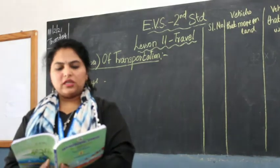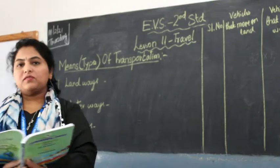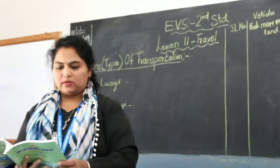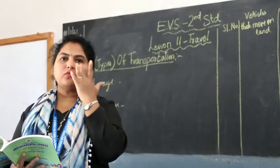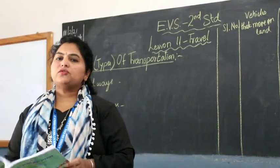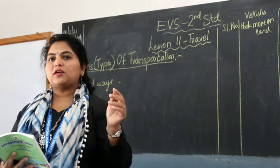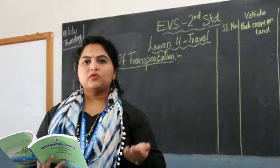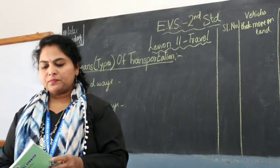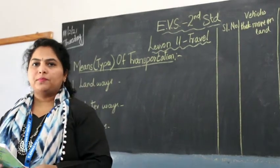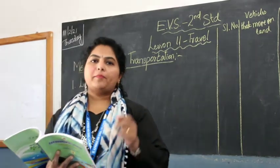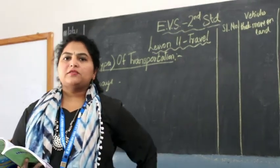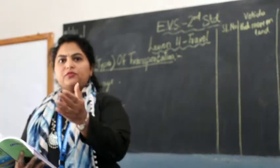Good morning, children. Today we are having the EBS class and we will go to Lesson 11: Travel. In this lesson, you will be learning different modes of transportation. Some of you come to school walking, some are dropped by parents on a bike or scooter, some come by car, bus, auto, or van. There are different kinds of ways you all come to school.